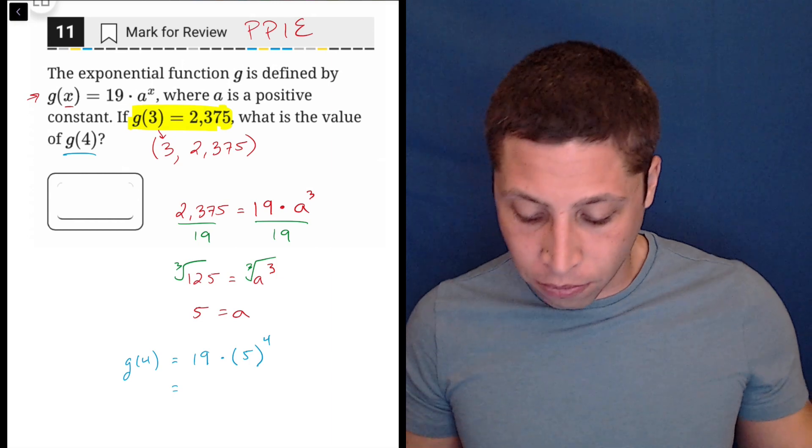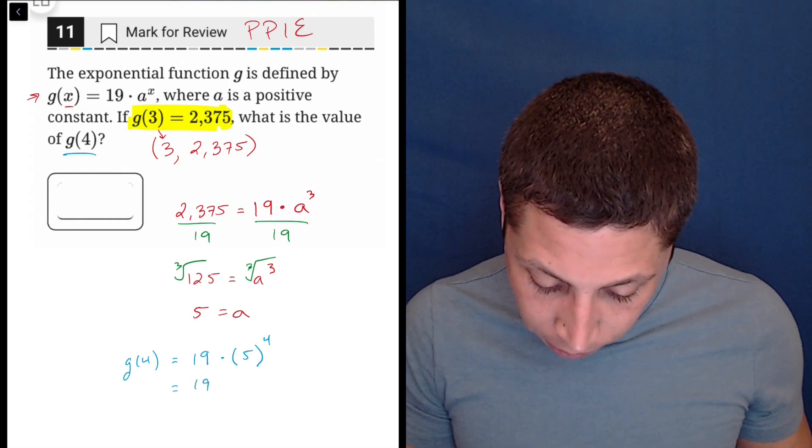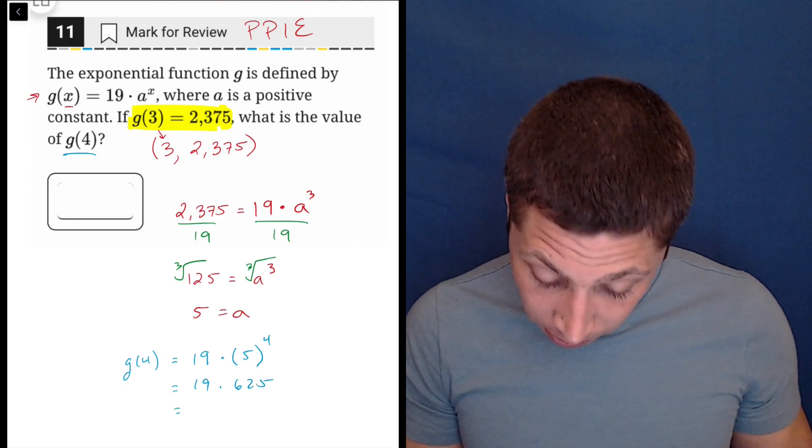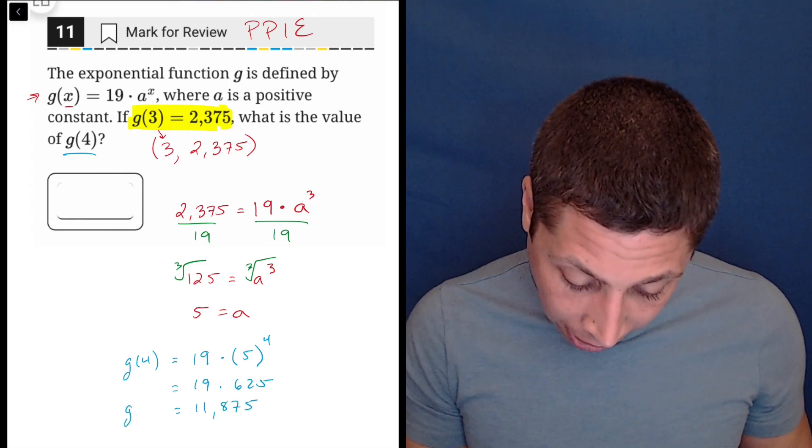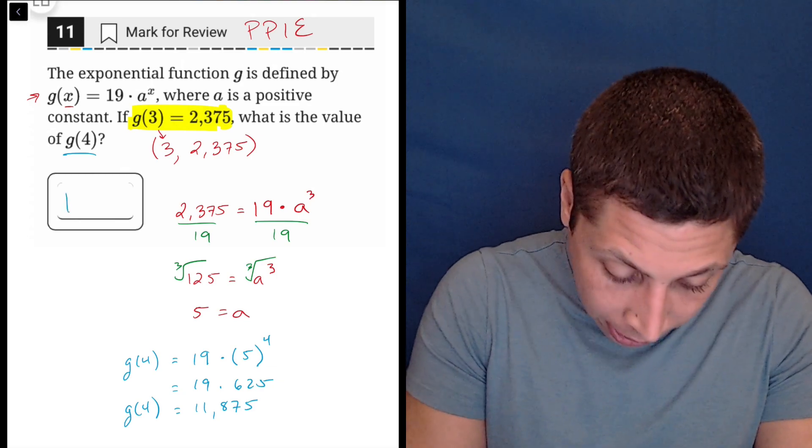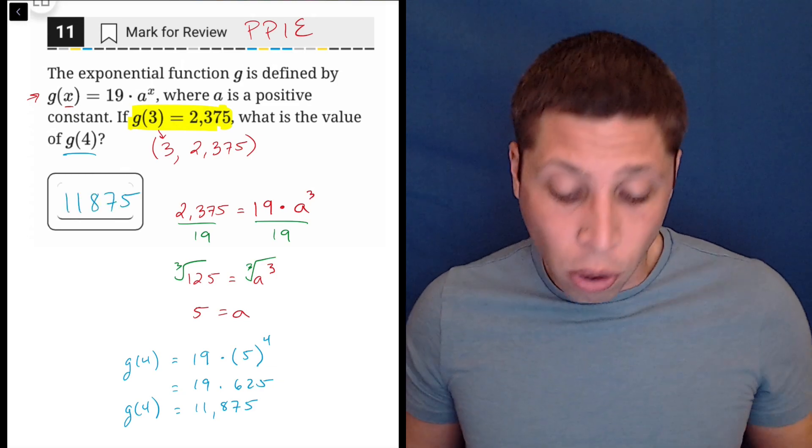Let's just simplify this. Five to the fourth. Five to the fourth is 625. So 19 times 625 is 11,875. And that is the answer. So it's a big number. We can bubble it in really easily, 11,875. That is it. That's all you have to do.